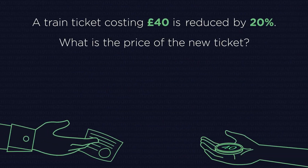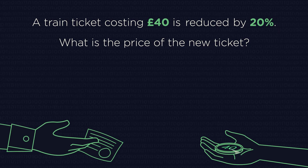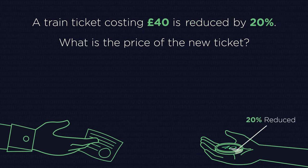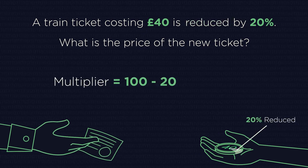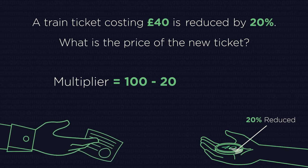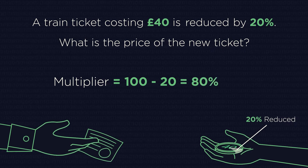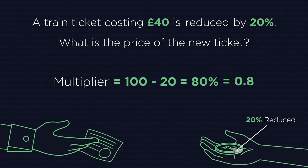Now that we know how to find multipliers, let's use them to find percentage increases and decreases. Back to our train ticket example. This is a percentage decrease question, so the multiplier is 100 minus 20, which is 80, and as a decimal it's 0.8.